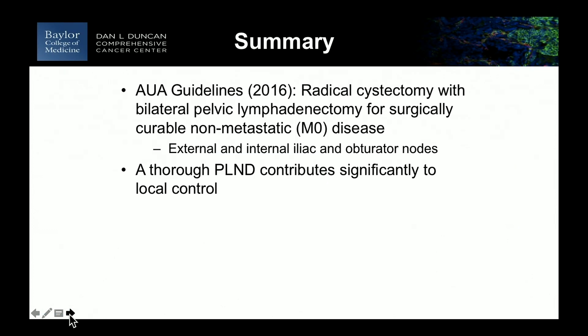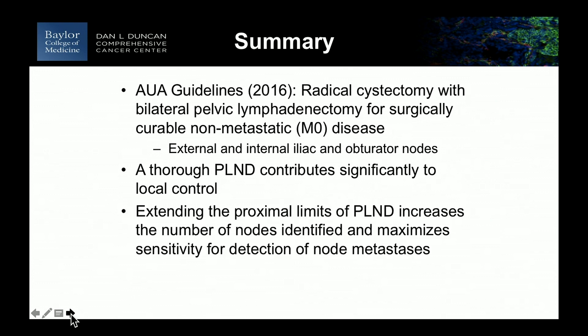In summary, our guidelines are very clear about the need for a bilateral pelvic node dissection associated with radical cystectomy. It provides important local control, and extending the node dissection identifies more metastases, can increase N-stage, and randomized trials are ongoing. Thank you.